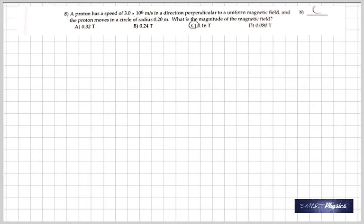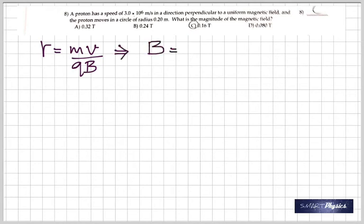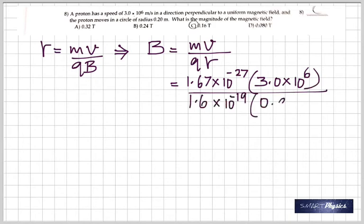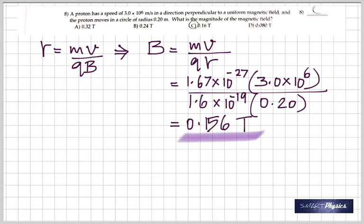Question 8: a proton has a speed of 3 times 10 to the 6 meters per second in a direction perpendicular to a uniform magnetic field, and it moves in a circle of radius 0.20 meters. What is the magnitude of the magnetic field? The radius formula r = mv/qB is used repeatedly. Rearranging for B, using the mass of the proton, the velocity, the charge of the proton, and the radius, you get 0.156 tesla. It enters perpendicular, and that's important because a circular path only results when the particle enters perpendicular to the field.